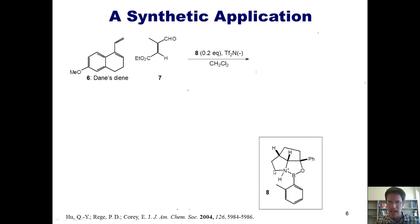In 2004, they reported treating molecule 6, called Dane's diene, with dienophile 7 and chiral catalyst 8, to stereoselectively give product 9, with 94% enantiomeric excess and 92% yield.